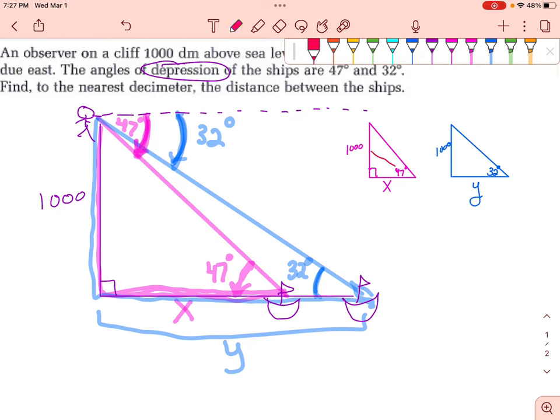So because we're dealing with the opposite and the adjacent sides for both of the triangles, opposite and adjacent, we can write these equations using tangent, TOA. So the tangent of 47 is equal to the opposite side over the adjacent side, and the tangent of 32 is equal to the opposite side over the adjacent side.